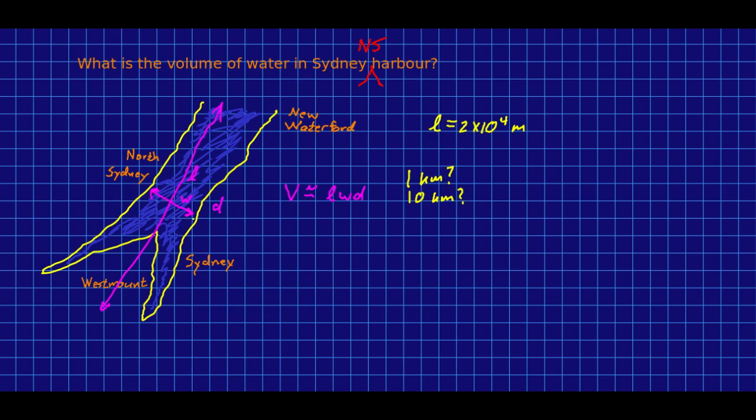Well, a useful thing to know is that if you're looking over water or flat land, like the prairies or something, the horizon is around about 5 kilometres away. And if you're standing over here in South Bar, looking over at North Sydney, it is not off on the distant horizon. So I'm going to say that it is closer to 1 kilometre. And so the width is roughly 1 times 10 to the 3 metres.